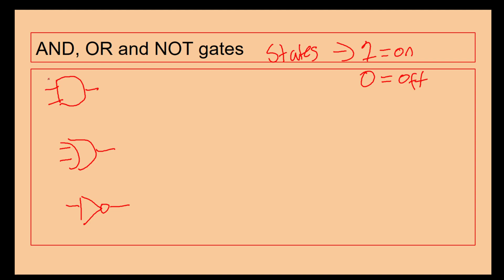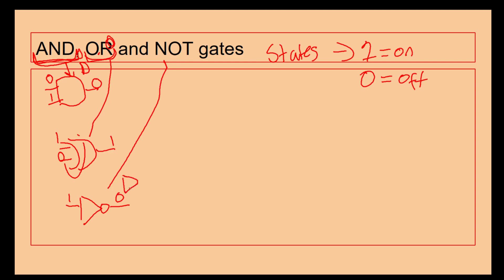With an AND gate it looks like a capital D, so that's an easy way to remember the AND gate. We've got an OR gate where this section here looks like the part of the word OR. And then we've got a NOT gate, which is the only one with a triangle in it — that's what the NOT gate looks like.